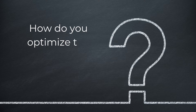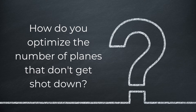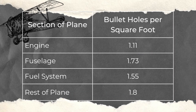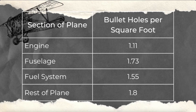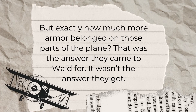The military came to the SRG with some data they thought might be useful. When American planes came back from engagements over Europe, they were covered in bullet holes, but the damage wasn't uniformly distributed across the aircraft — there were more bullet holes in the fuselage and not so many in the engines. The data showed bullet holes per square foot by section: the engine had 1.11, the fuselage had 1.73, the fuel system 1.55, and the rest of the plane had 1.8. The officers saw an opportunity for efficiency: concentrate the armor on the places getting hit the most. But exactly how much armor belonged on those parts of the plane? That was the answer they came to Wald for.